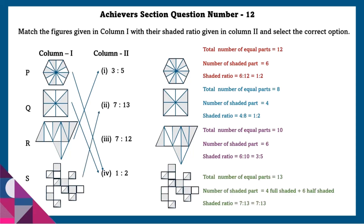Last figure: total number of equal parts equals 13, number of shaded parts equals 4 full shaded plus 6 half shaded. Shaded ratio equals 7:13.